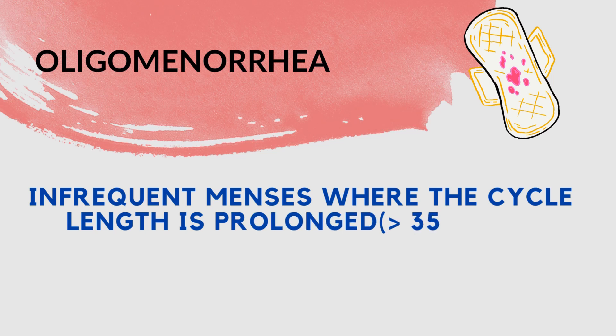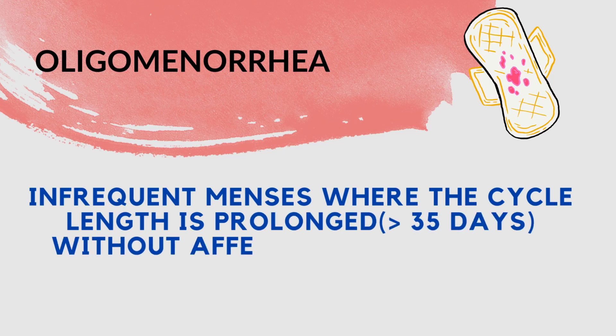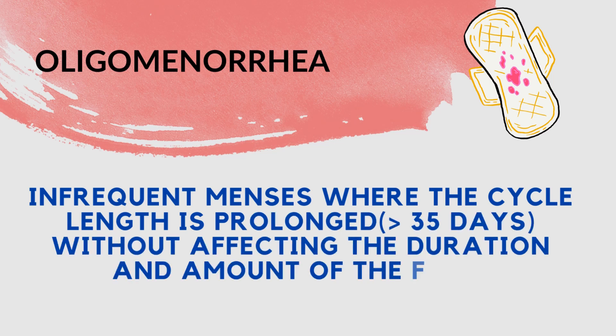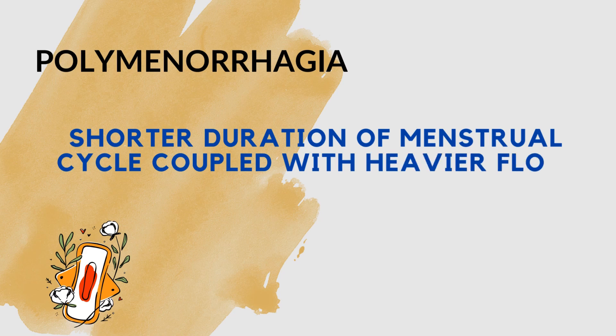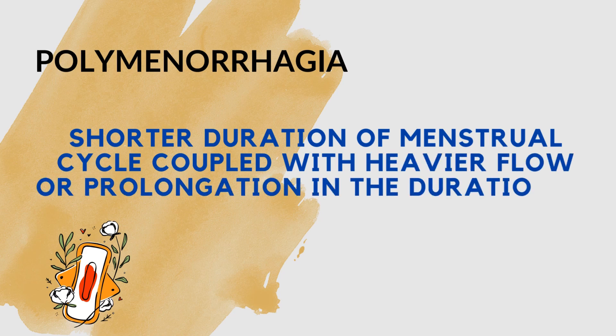Oligomenorrhea is infrequent menses where the cycle length is prolonged, lasting more than 35 days, without affecting the duration and amount of flow. Polymenorrhea is a shorter duration of the menstrual cycle coupled with heavier flow or prolongation in the duration of the flow.